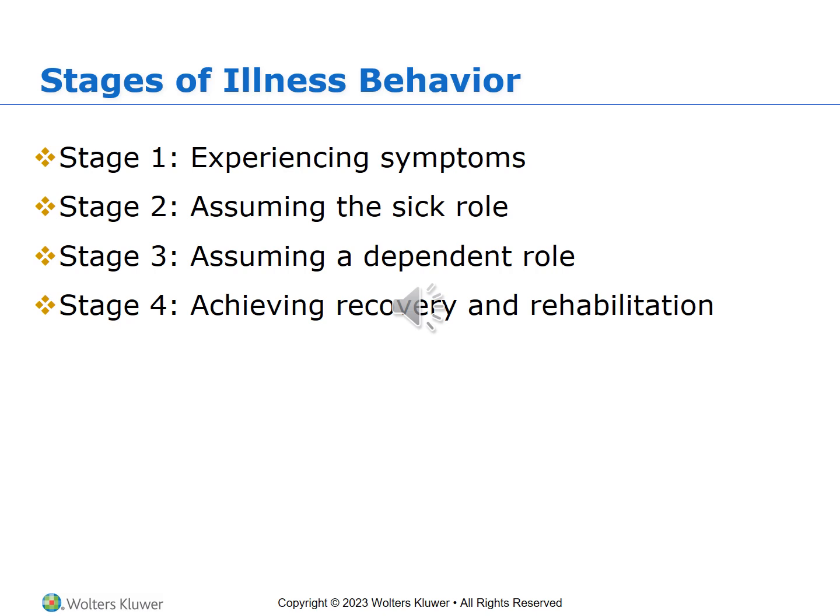In Stage 1, the person starts to experience signs and symptoms of illness — one or more symptoms incompatible with their personal definition of health. They may wait to see if symptoms resolve on their own, and if so, may not pursue further treatment. However, if symptoms persist or worsen, they enter Stage 2. In Stage 2, assuming the sick role, the person self-defines as being sick, seeks validation from others, gives up normal activities, and assumes the sick role.